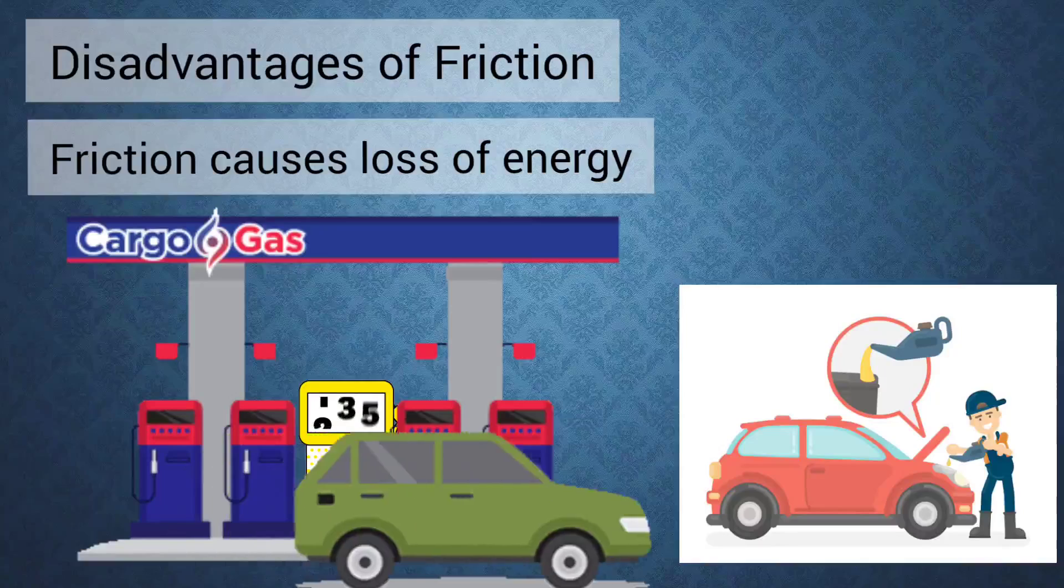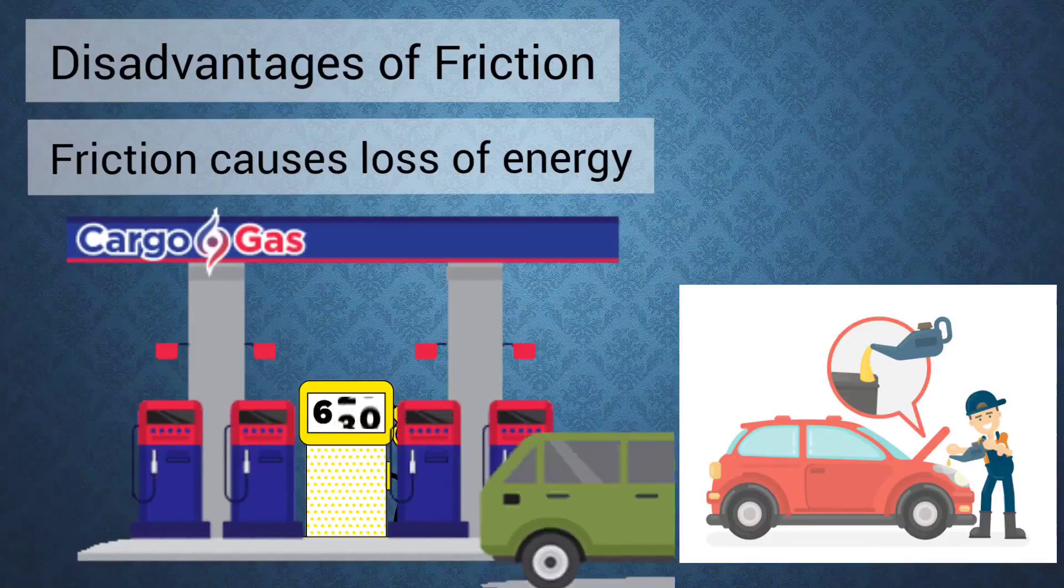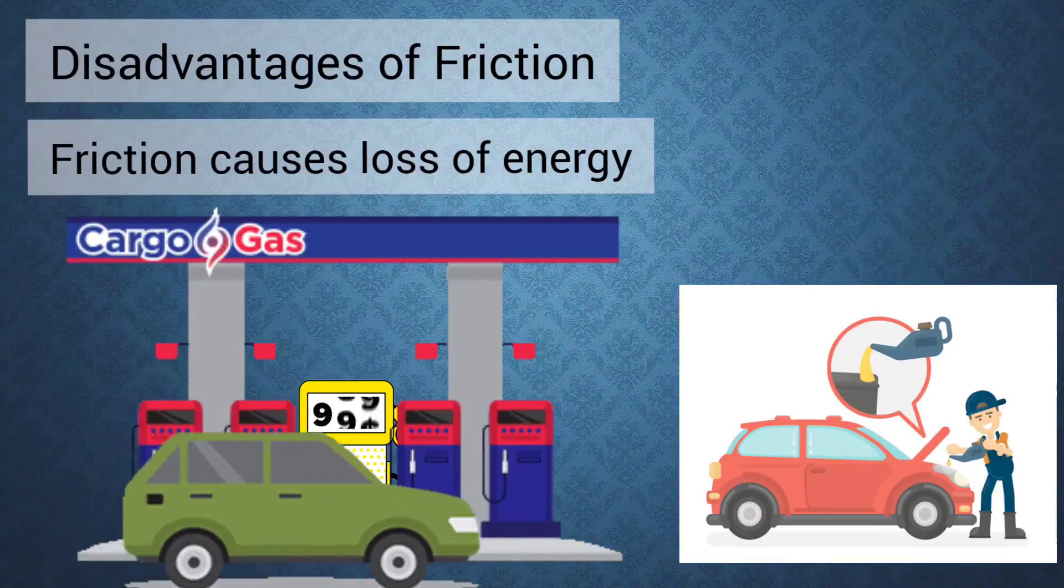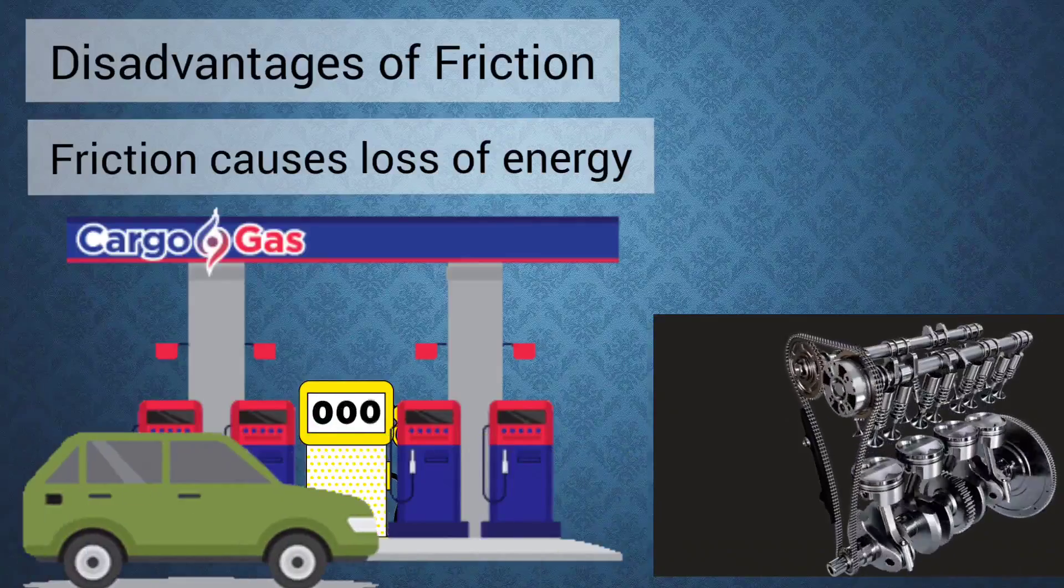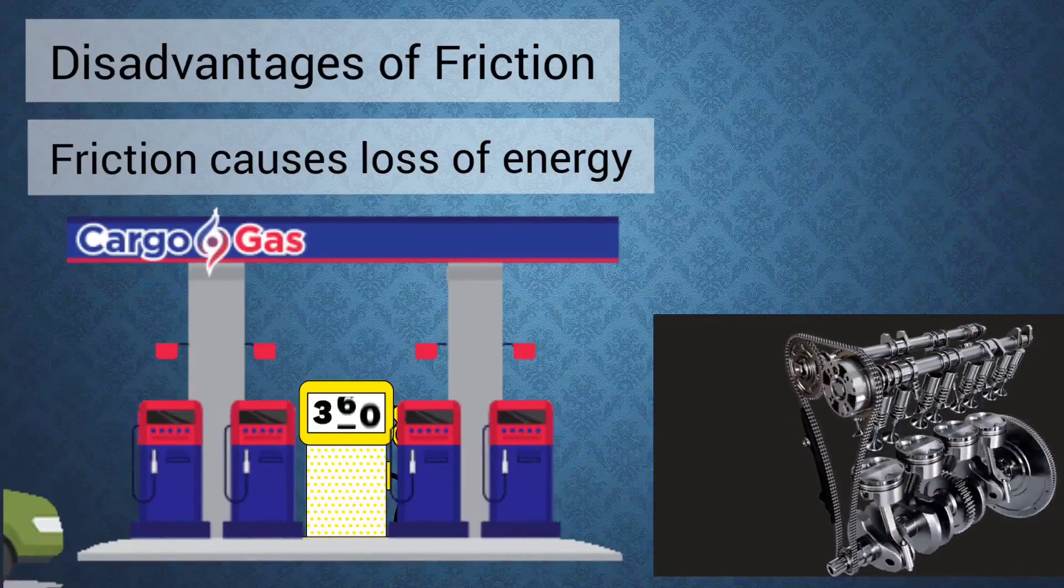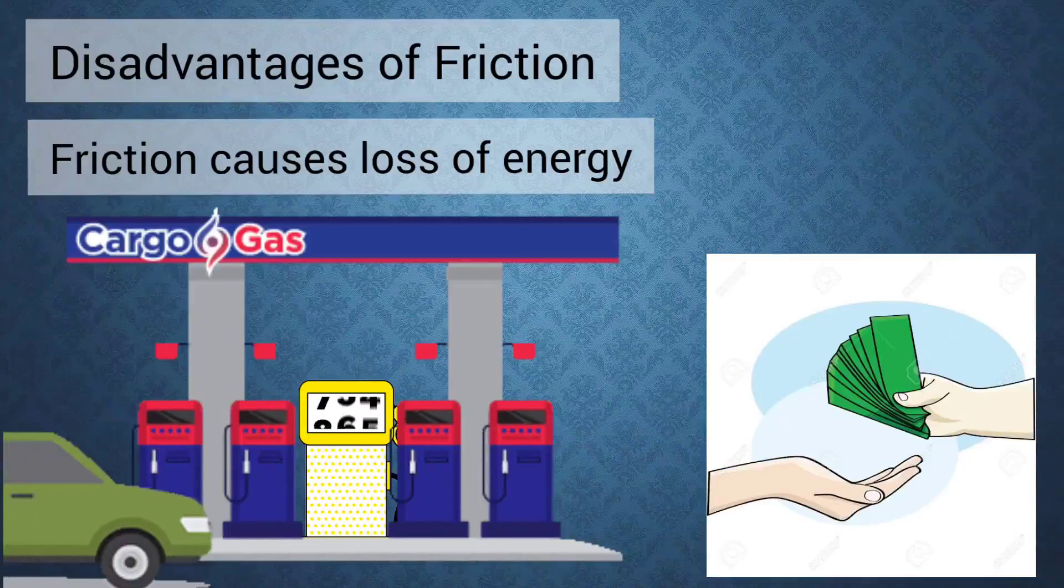For example, as much as 10% of fuel burnt in a car or any other vehicle is used to overcome the friction in the engine. Thus it increases the expenditure on fuels. Understood?